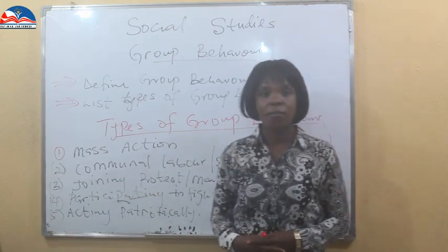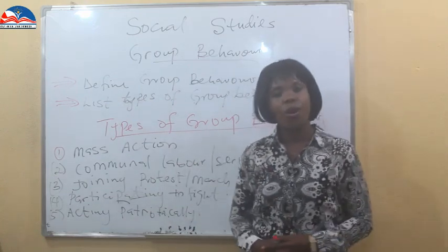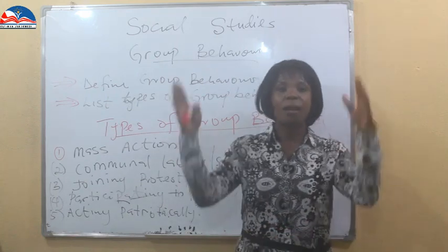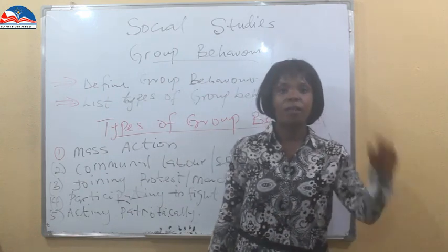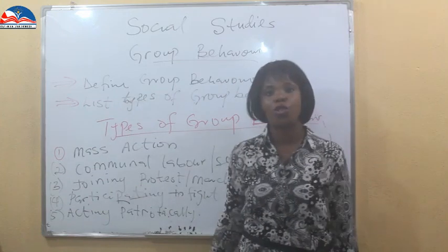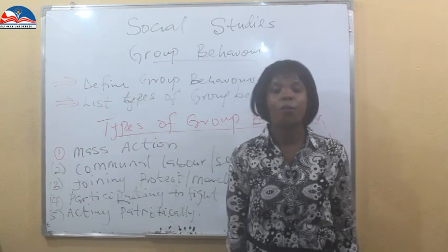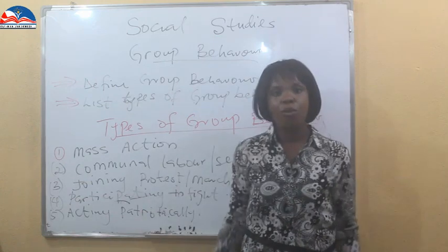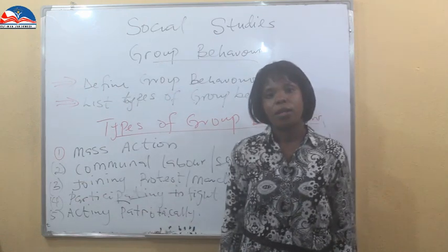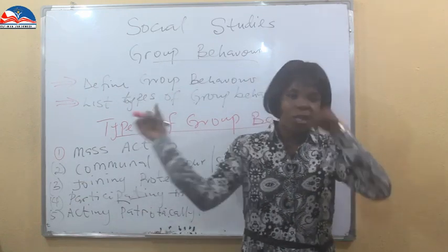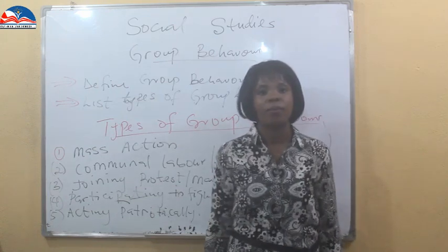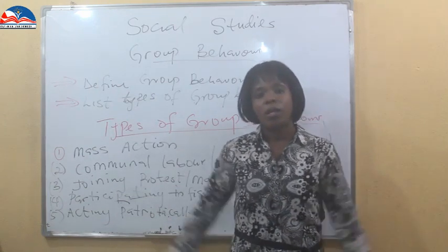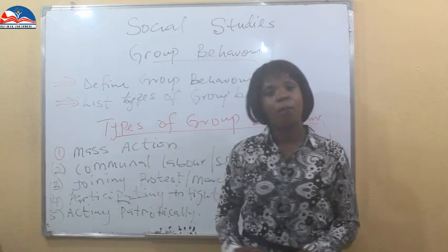Joining in protest march: when there is something that is not going right — like in mass action — there is a march. A day is fixed to go out in the streets, a day is fixed for people to turn up, to carry placards, to come and protest against what is happening — injustice, corruption. This group is formed for a particular purpose.